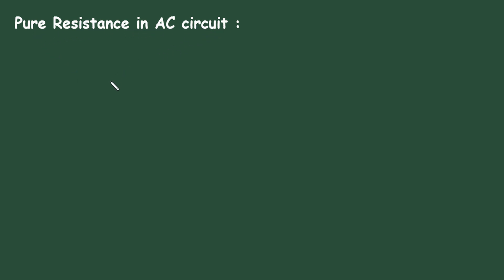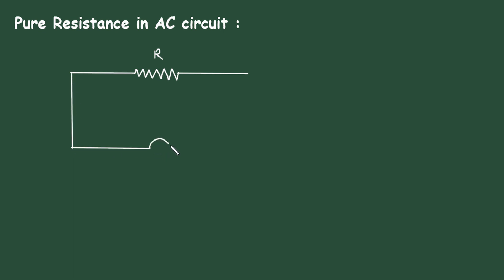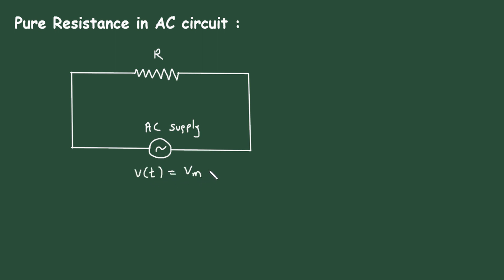Pure resistance in AC circuit. First of all, let's draw an AC circuit with resistance R. This is our AC supply with voltage V(t) = Vm sin(ωt), where Vm is the maximum voltage or amplitude, ω is the angular frequency in radians per second, and t is time in seconds.